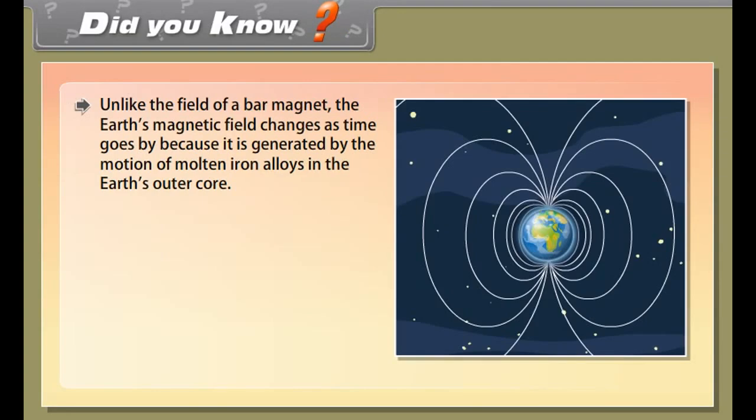There are different circuits used for different appliances being used in the house. The earth wire is connected to a metal plate deep into the earth to avoid receiving any severe shock in case of any leakage of current while using the appliances.